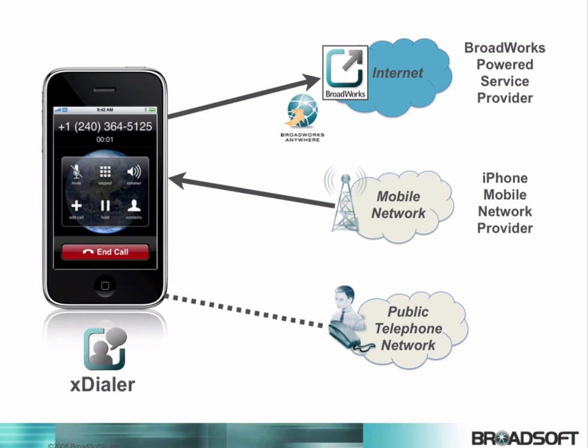Because the call was set up using Broadworks Anywhere, the person you are calling will see your Anywhere number for their caller ID, not your iPhone number. That means if they call you back, your Anywhere service will be invoked and any other phones you have set up to ring will ring as well.